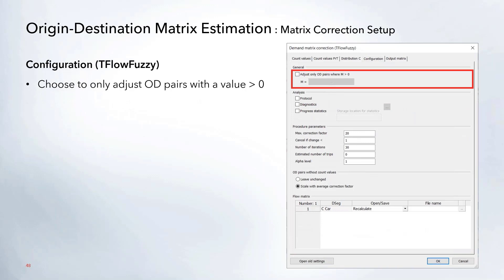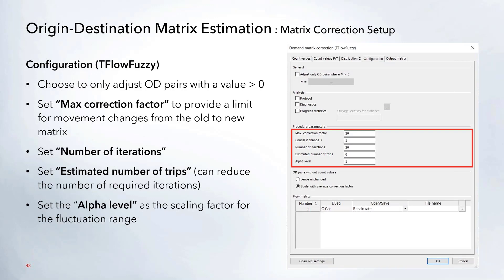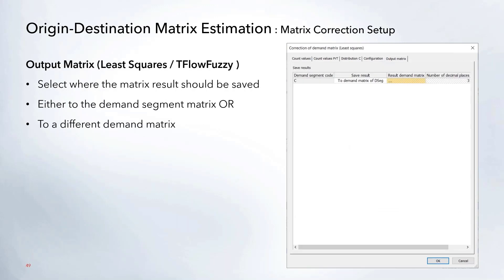For T-Flow Fuzzy, you can also choose which OD pairs to adjust, and there are additional procedure parameters: a max correction factor that limits the amount of change between the old and new matrix, a maximum number of iterations, and an alpha level — a scaling factor used in conjunction with the fluctuation range. Finally, the Output Matrix tab is where the result matrix is saved. By default it saves to the demand matrix associated with that demand segment, but you can change this to save results in a separate matrix for comparison or to keep the original matrix intact.